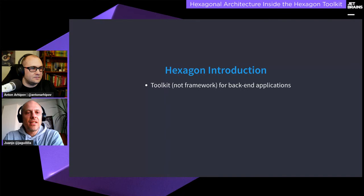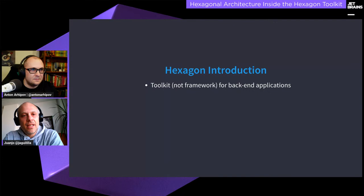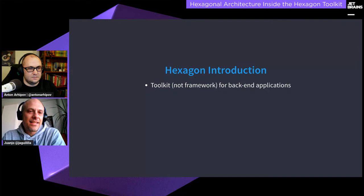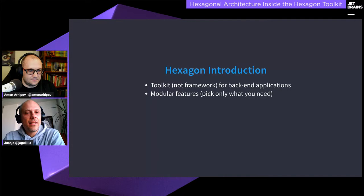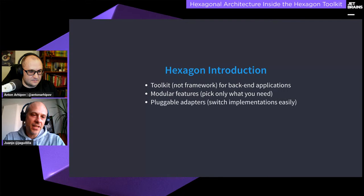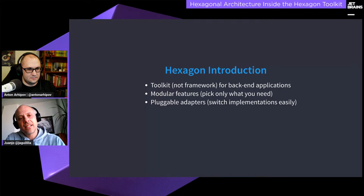Hexagon is a toolkit, not a framework — so the lifecycle is managed by you. You start the server, not the other way around, and that's the biggest difference with the major Java frameworks out there. It's comprised of very small modules so you can pick only what you need, and your binary is not going to have anything more — the resulting binaries are going to be very small. Finally, it has pluggable adapters for each feature so you can provide different implementations, which is very handy when testing with mocks.